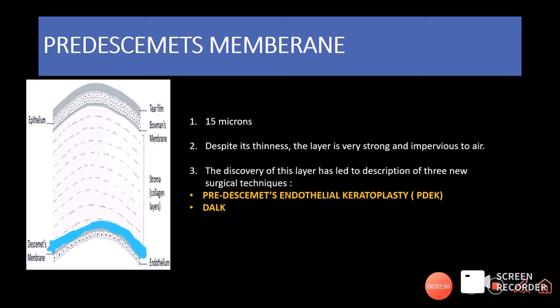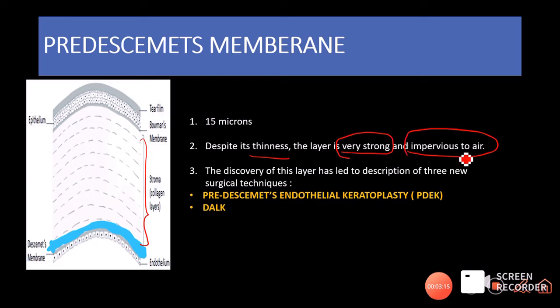Now let us talk about the pre-Descemet's membrane, also called Dua's layer. It is about 15 microns thick and is present between the stroma and Descemet's membrane. Despite its thinness, it is very strong and impervious to air. This property is used in the development of new surgeries such as pre-Descemet's endothelial keratoplasty (PDEK), DALK, and new DALK with bubble techniques — type 1 and type 2 bubbles — based on the discovery of Dua's layer.